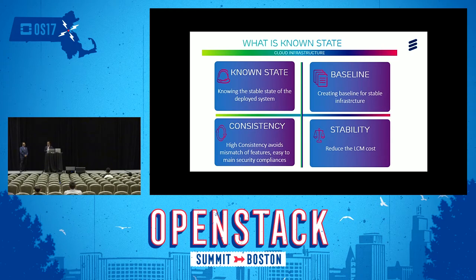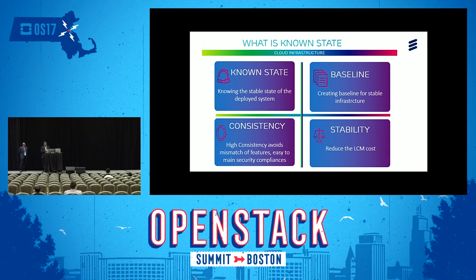A high degree of consistency means, for example, if we have 200 compute nodes deployed in the site, all those deployed computes should be on the same hardware levels, they should have the same software deployed, they have the same configuration file settings, and other configurations should be the same across all deployed sites. A high consistency in the network avoids mismatch of features across the infrastructure and makes it easy to maintain security compliances as per industry standards.